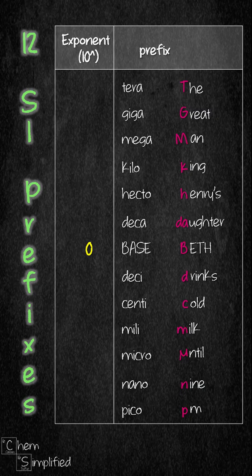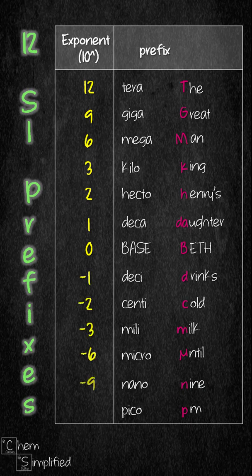Starting from base, the exponents go 0, 1, 2, 3, and then multiples of 3: 6, 9, 12. And going the other way is the same except they have a negative sign.